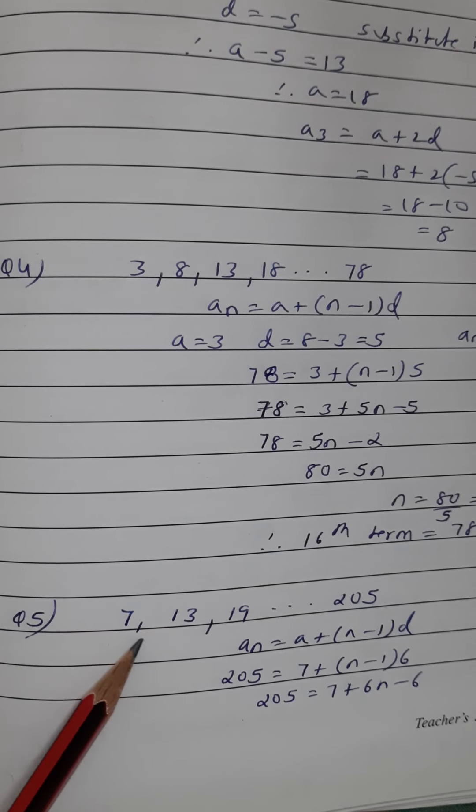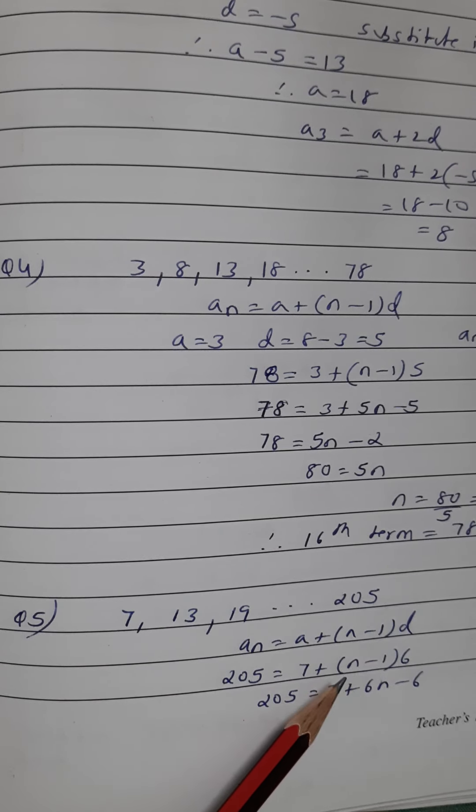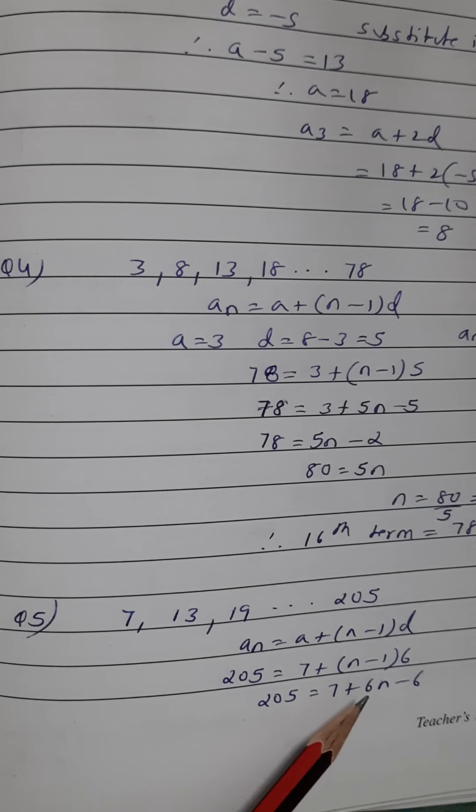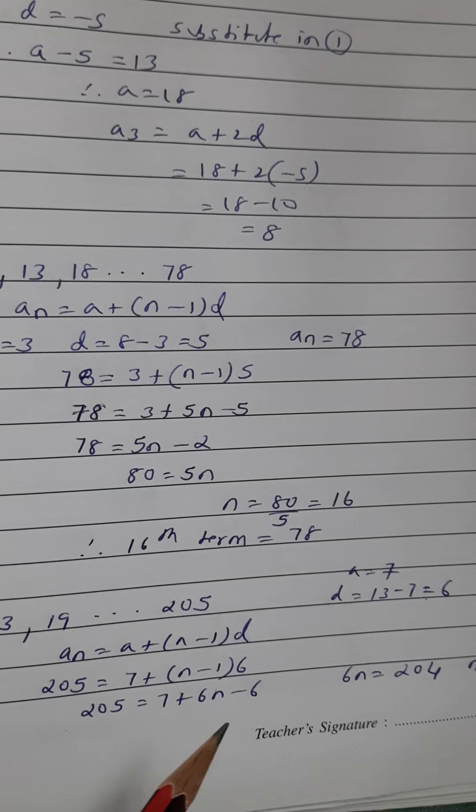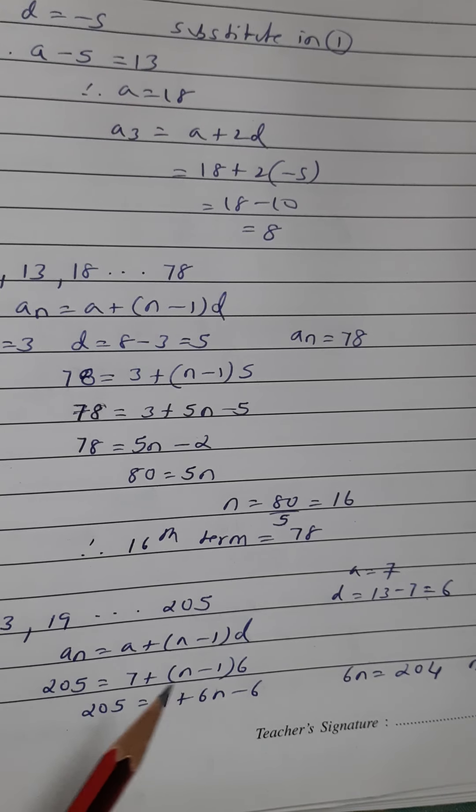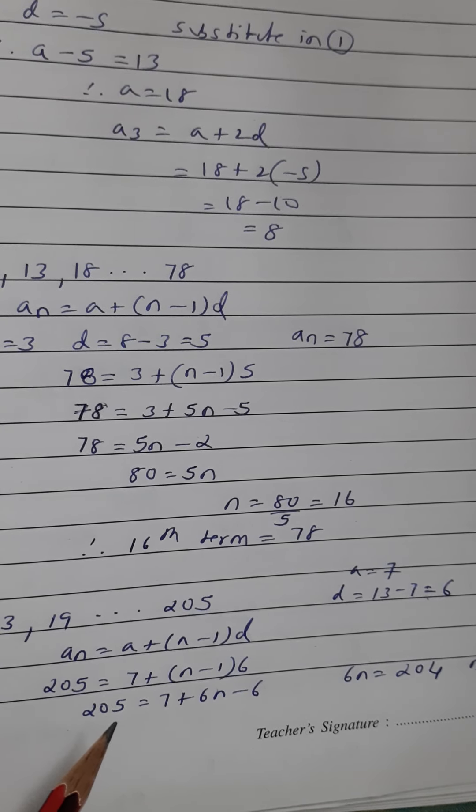So it's a similar question. Last term is 205, that is your a_n. a is 7. Common difference is 13 minus 7, which is 6. You are substituting this, opening the brackets and solving for n. So here 6n, the value will be, what is 7 minus 6? It's 1. I am transferring 1 to this side, you will get 204.